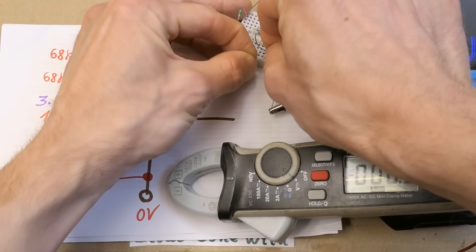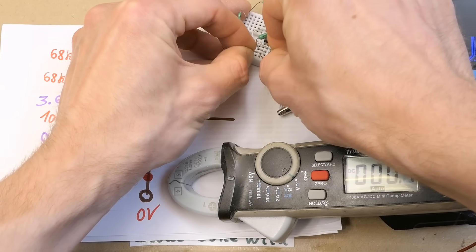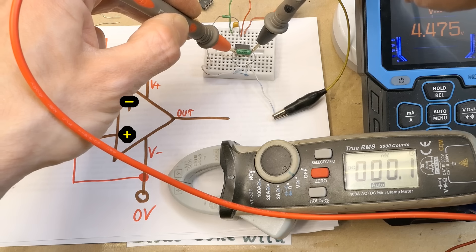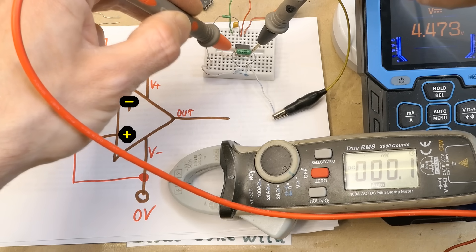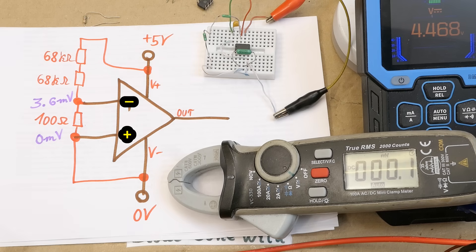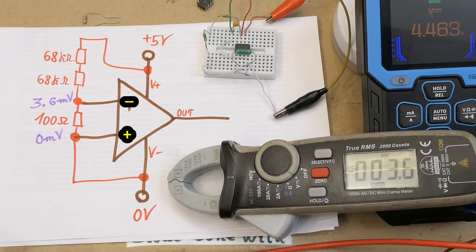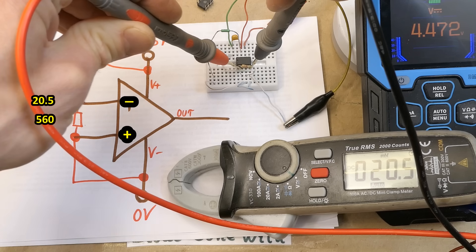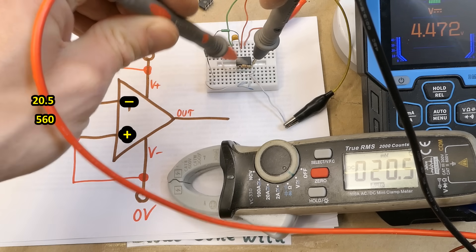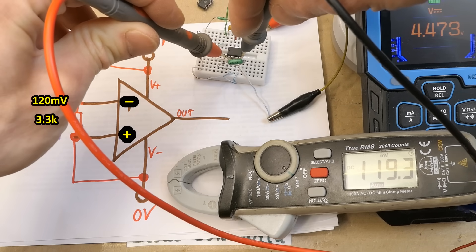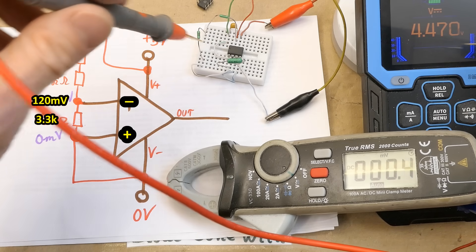Now let's flip the inputs. And this is where it's starting to be interesting. Now the inverting input is about 3.8 millivolts. The non-inverting zero. Because the inverting is higher, it should be low, but it's still high. The output is 4.46 volts. Let's give it even more differential voltage at the inputs. Now the inverting input is 20 millivolts above the non-inverting and the output is still high. The inverting 120 millivolts above, the output is still high.